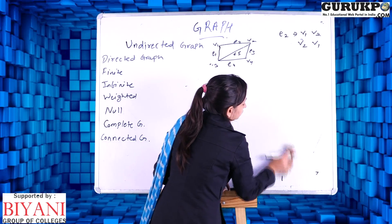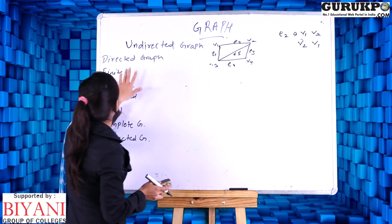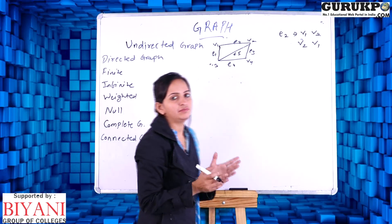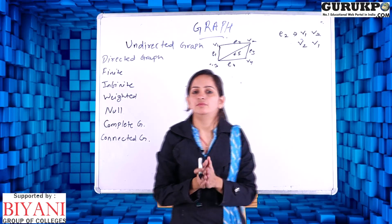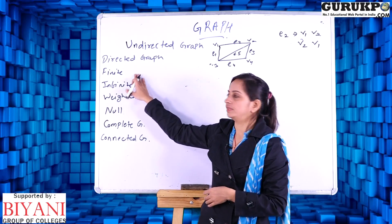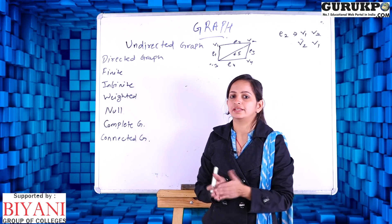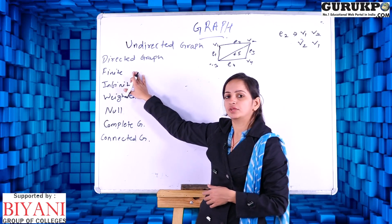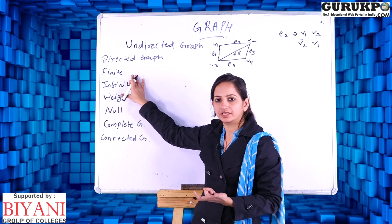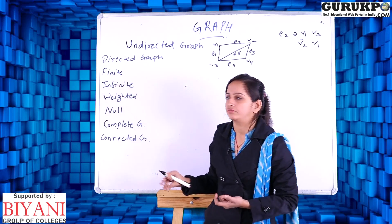Now let us move to the next type of graph in the list — that is the finite graph. A finite graph is any graph which has a finite number of vertices. It has a finite degree because the number of vertices determines the degree. So if we have a finite number of vertices, we say the graph has a finite degree, and that graph is called a finite graph.